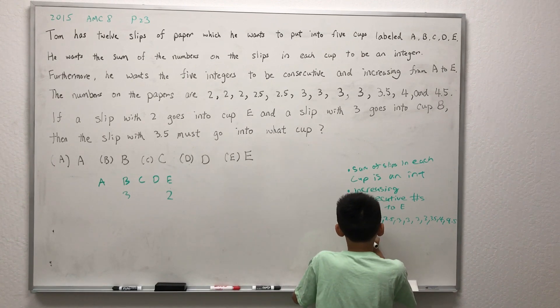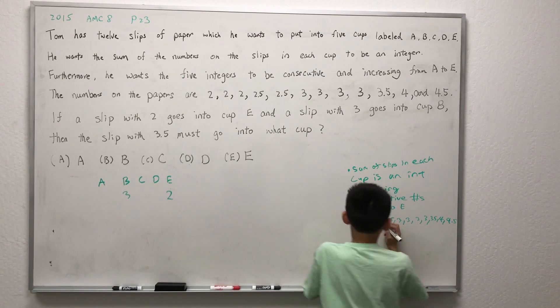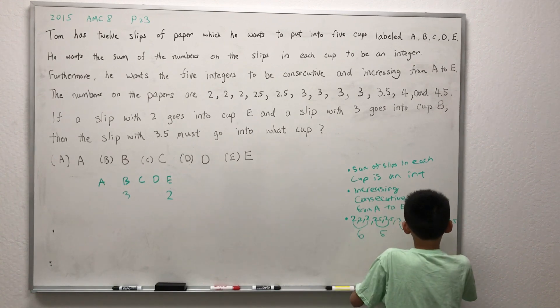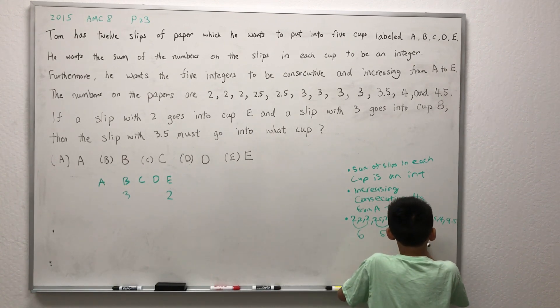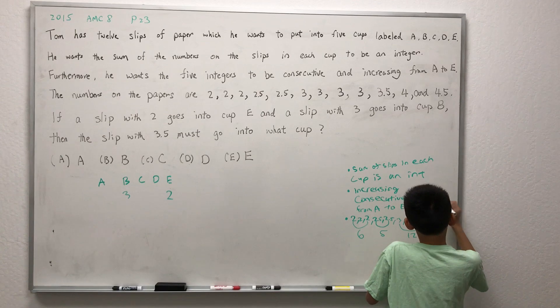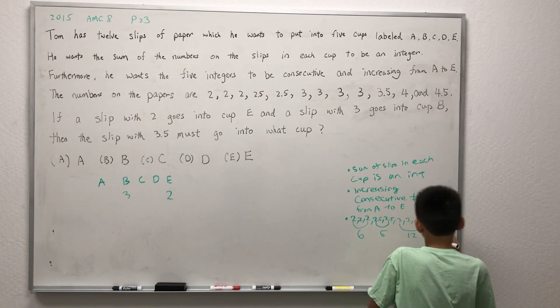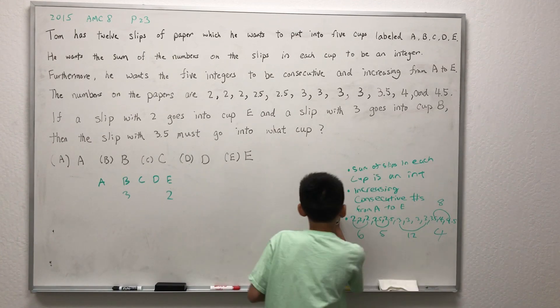Let's do some number crunching. 2 plus 2 plus 2 equals 6, 2.5 plus 2.5 equals 5, 3 plus 3 plus 3 plus 3 equals 12, 3.5 plus 4 plus 4.5 equals 8, and 4 is simply 4. Adding this all up is 35.